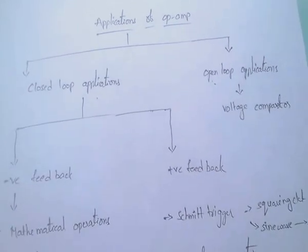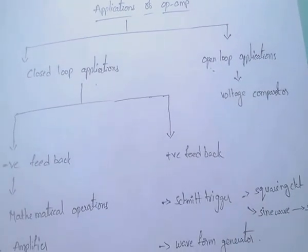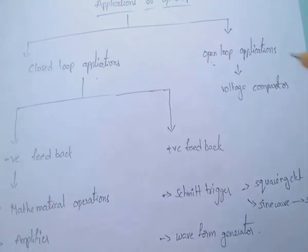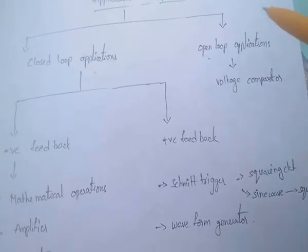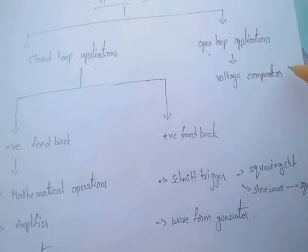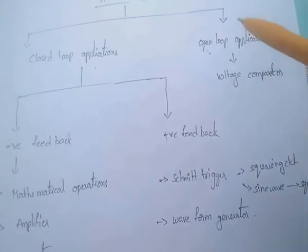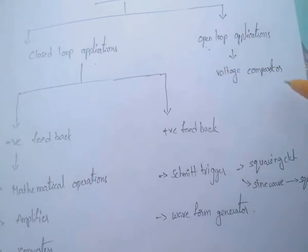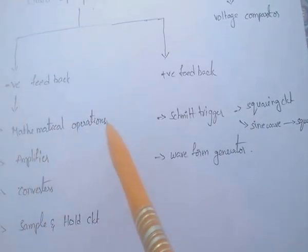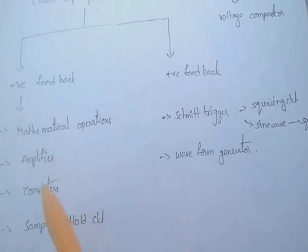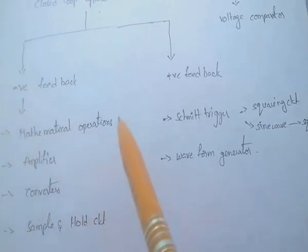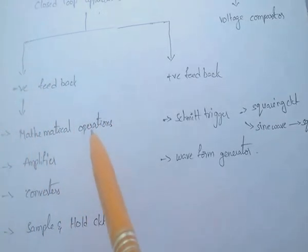Coming to the applications of op-amp. It has mainly two types of applications: closed loop and open loop. In case of open loop applications, the op-amp is used as a voltage comparator. In case of closed loop applications with negative feedback, it is used for mathematical operations, acts as an amplifier, and is used in sample and hold circuits.